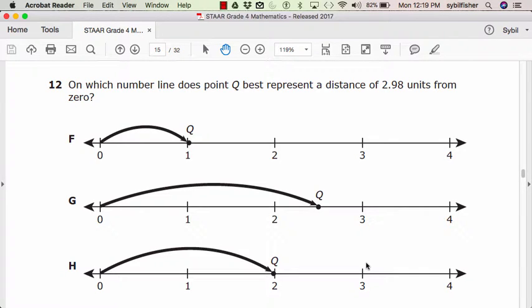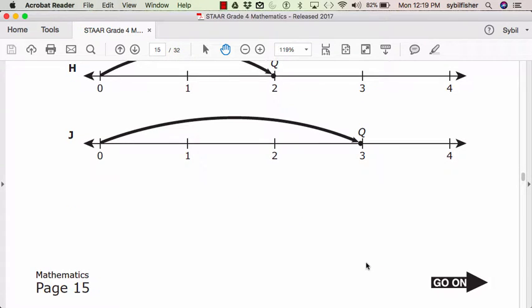Number twelve. On which number line does point Q best represent a distance of 2.98 units from zero? F, G, H, or J.